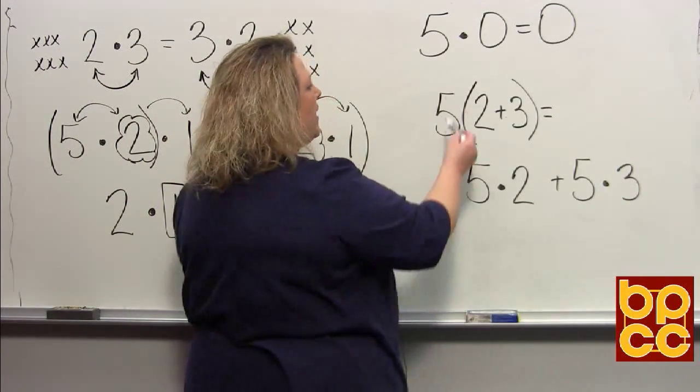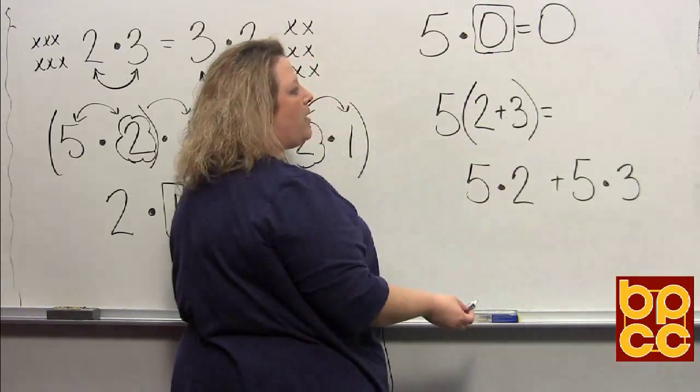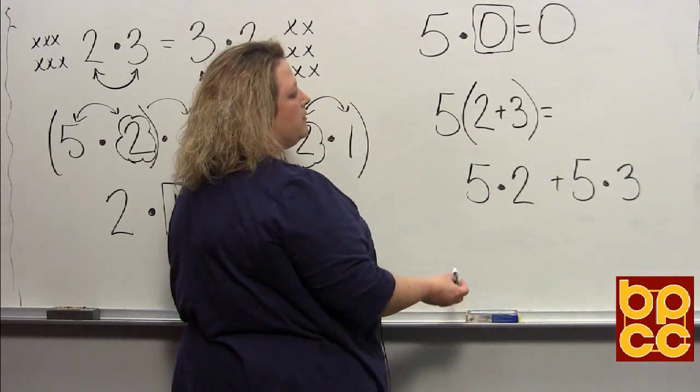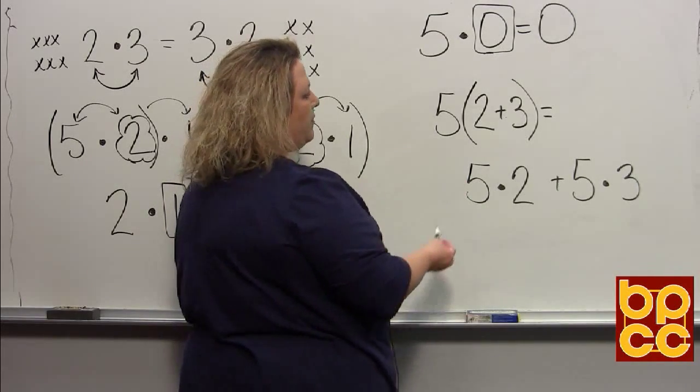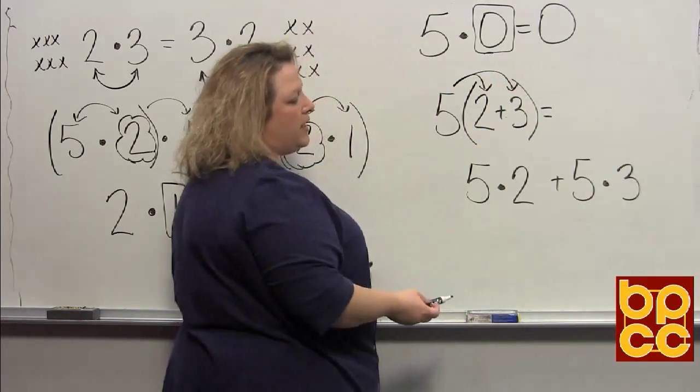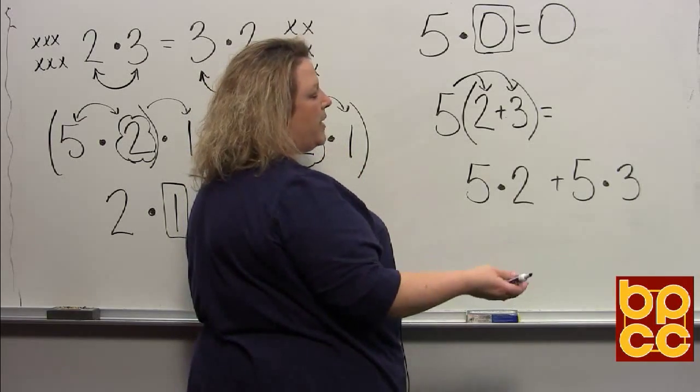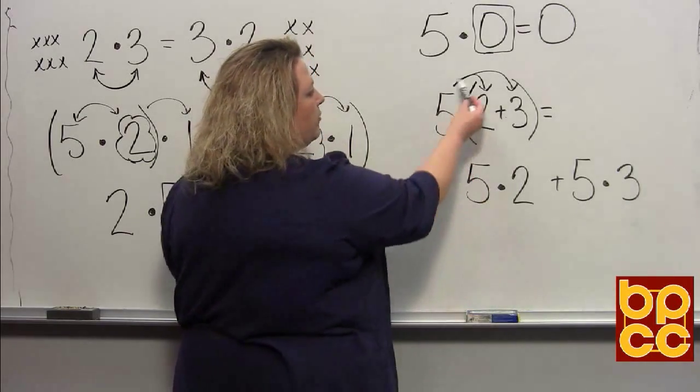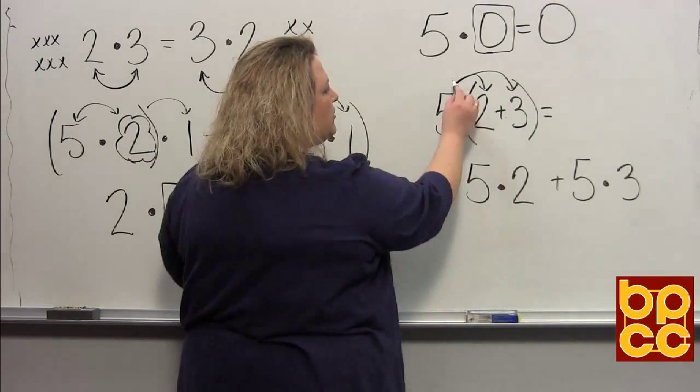Then you have the property of zero, and that means any number times zero gives you zero, no matter how big or small the number is. And then the last property, probably the most used property in math, is called the distributive property. Distribute is kind of like you're standing at the end of a row and you want to pass papers out to your friends, so you want to make sure that every person in the parentheses gets your papers.